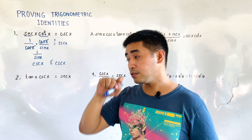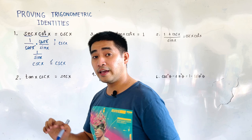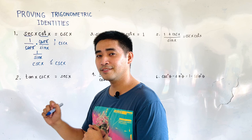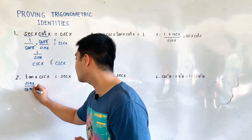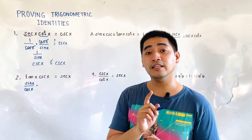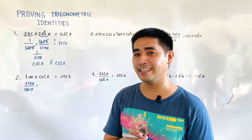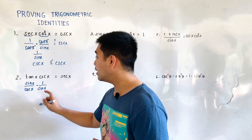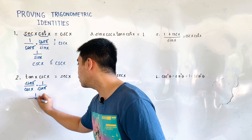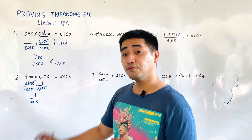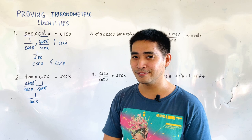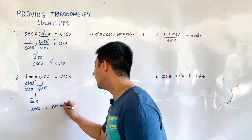Tangent of x times cosecant of x. We know that tangent of x is a quotient identity equal to sine of x over cosine of x. Multiplying that by cosecant of x, we reduce cosecant using its reciprocal identity to 1 over sine of x. This allows us to cancel out sine, simplifying to 1 over cosine of x. And 1 over cosine of x by the reciprocal identity is equal to secant of x. Therefore, the left side and the right side are equal, and we were able to prove an identity.